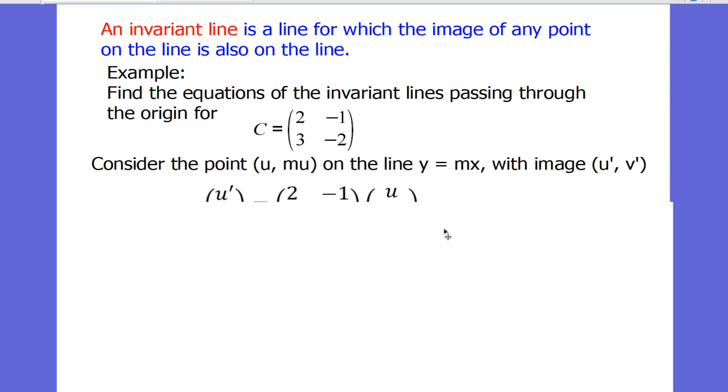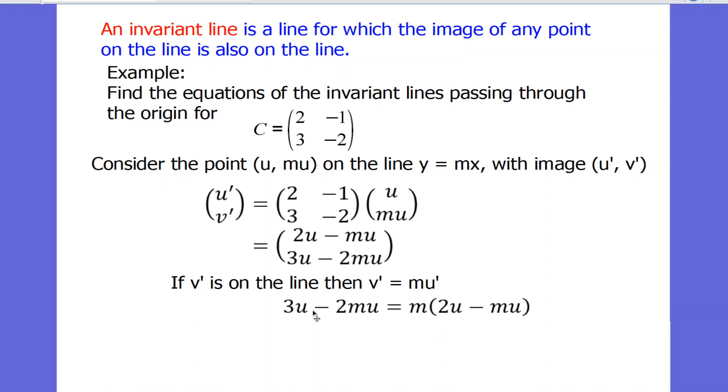What's the image of this? We're going to call it u dash v dash. u dash v dash is equal to just the matrix times the initial point, (u, mu). We can multiply that matrix by that vector. And then we're told if v dash is on the line, then v dash equals m u dash. So we get a very long equation here. This is v dash is on the bottom, and this is m times u dash. We expand the brackets. We've got a quadratic equation.